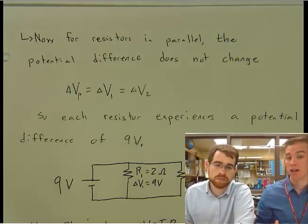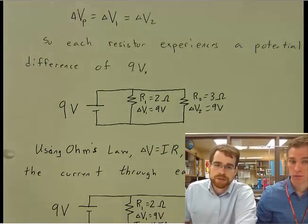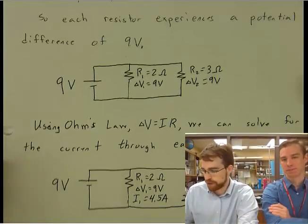But they all go from the top to the bottom. So they all have the same gravitational potential energy. Same is true for resistors in parallel. They all have the same potential difference. So we can just assume that they're both 9 volts.